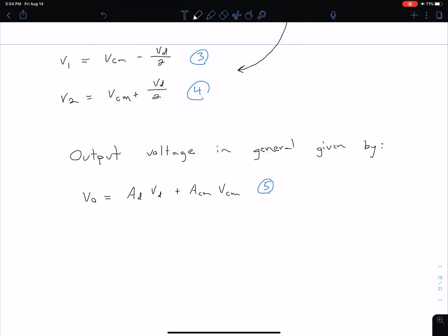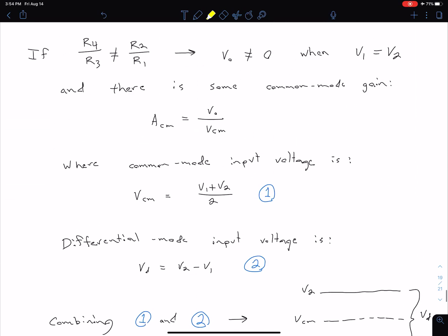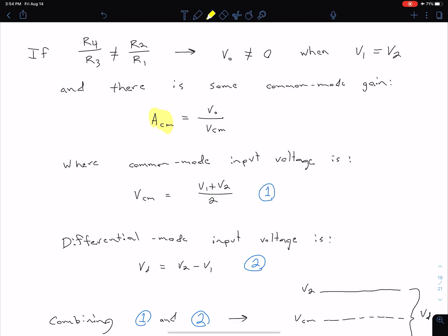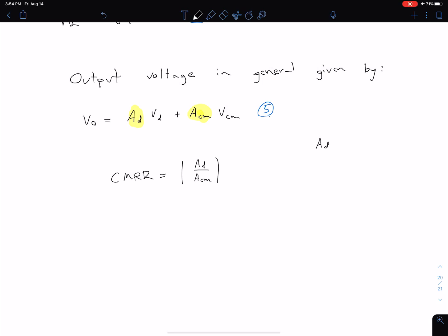Now our sort of merit of how well or how ideal our difference amplifier is - our common mode rejection ratio - is then just defined as CMRR equals the magnitude of Ad over Acm. What is the value of the differential mode gain divided by our common mode gain? Our common mode gain we had defined up here as V out over V common mode, and our differential gain we had defined in a previous video as R2 divided by R1.